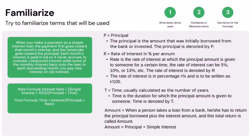Time is denoted by T. When a person takes a loan from a bank, he or she has to return the principal borrowed plus the interest amount, and this total return is called the amount. Amount equals principal plus simple interest.